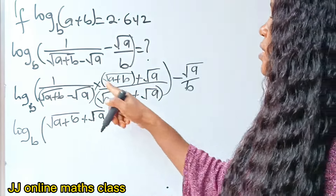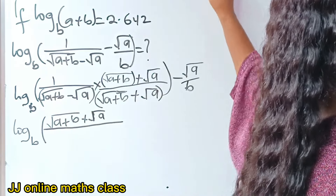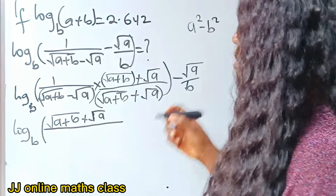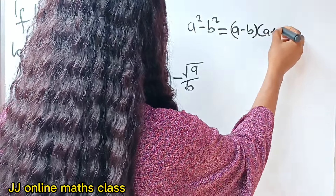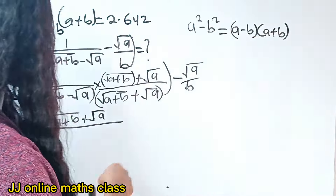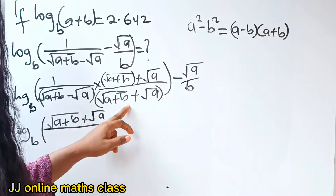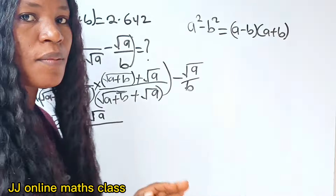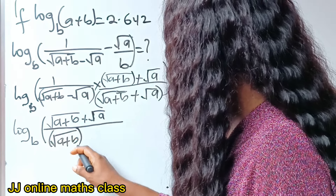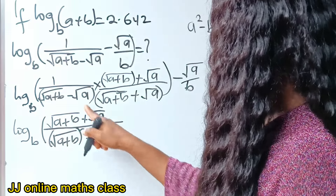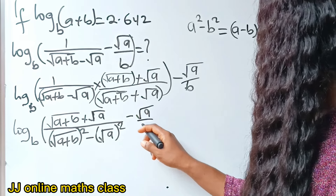The numerator gives us root (A plus B) plus root A. For the denominator, we have what's called the difference of two squares: A squared minus B squared equals (A minus B)(A plus B). Here, our A is root (A plus B) and our B is root A. So the denominator becomes root (A plus B) squared minus root A squared, then minus root A over B.